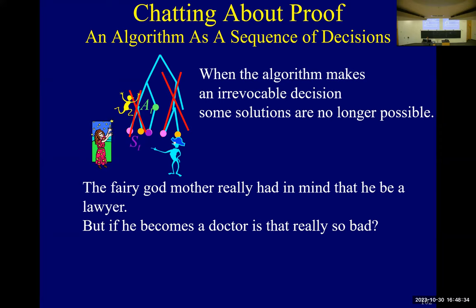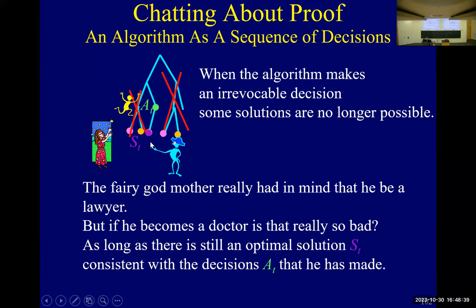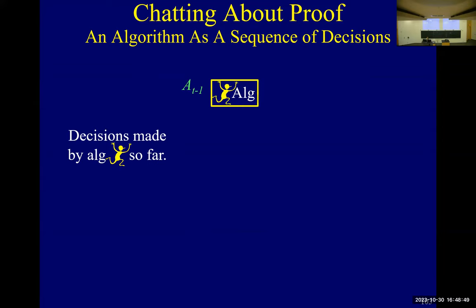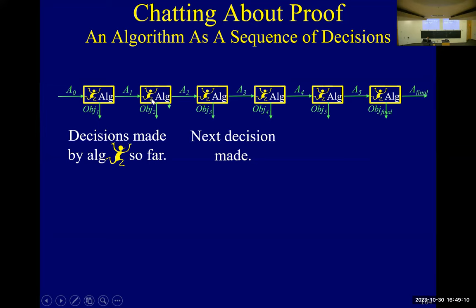The key is: as long as there's an optimal solution consistent with what we're doing, we'll be fine. Proof by picture: those are what the algorithm has done so far. Then the algorithm makes a decision about the next object, and it knows this is what it's done — it keeps making a decision about the next object.